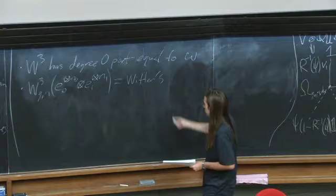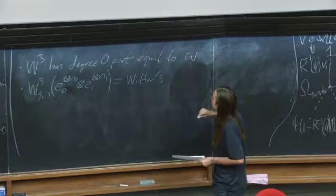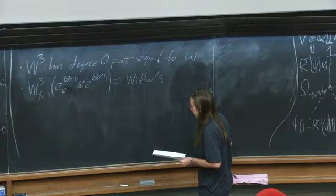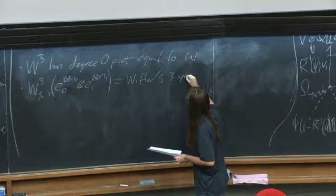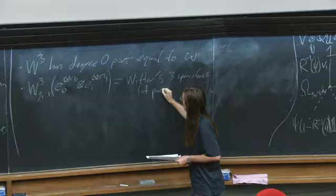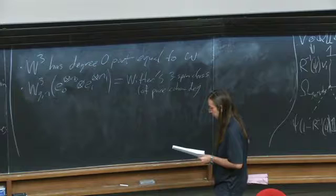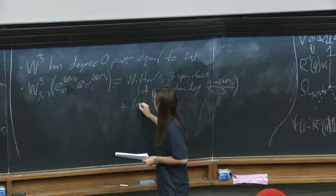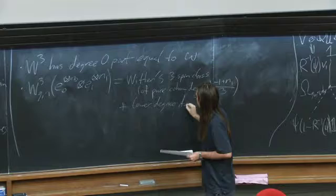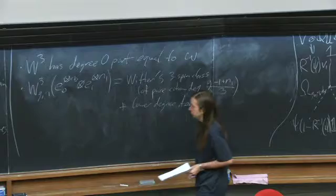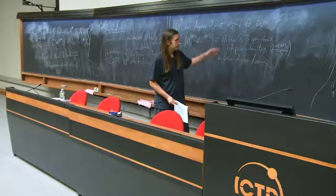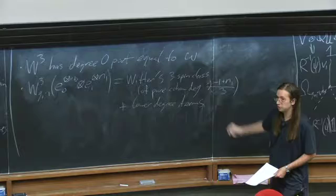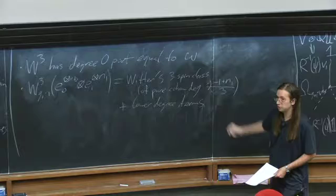...is in homological degree equal to (g − 1 + n_1)/3, plus lower degree terms. The lower degree terms are due to the shift I haven't described. The top degree piece is pure degree (g − 1 + n_1)/3, equal to Witten's 3-spin class there; above that homological degree this cohomological field theory vanishes.